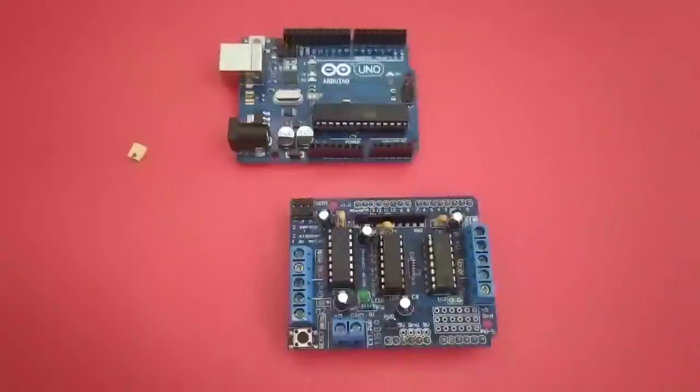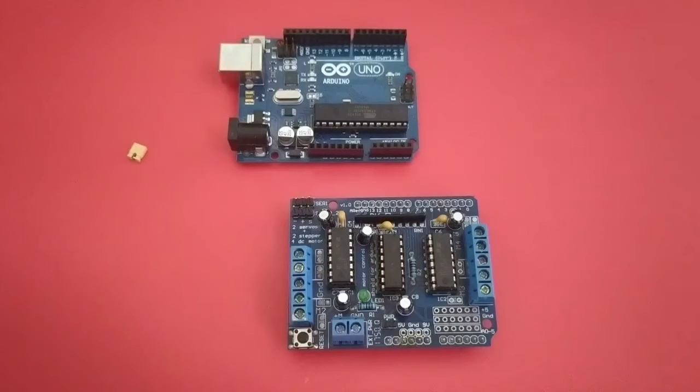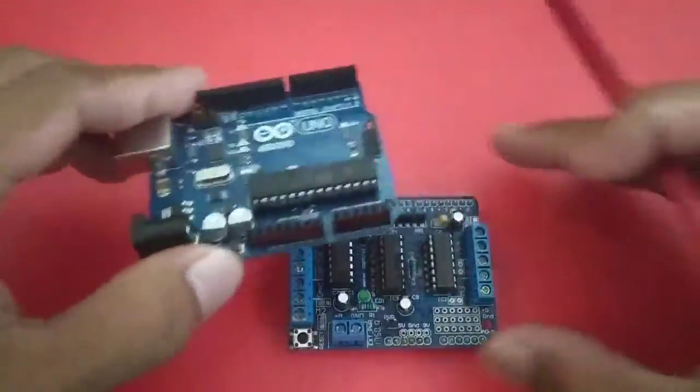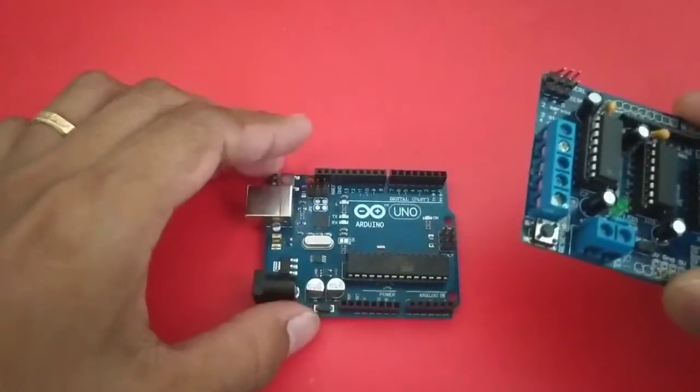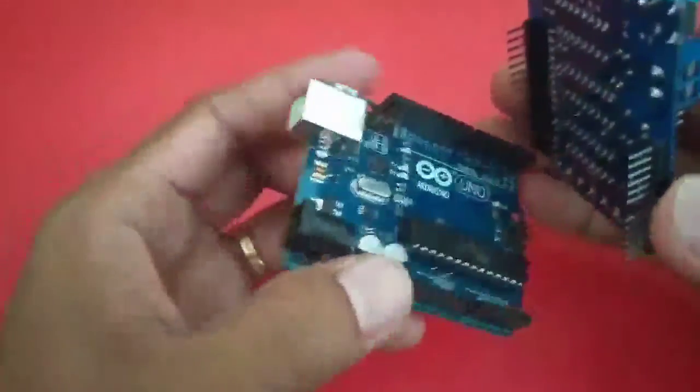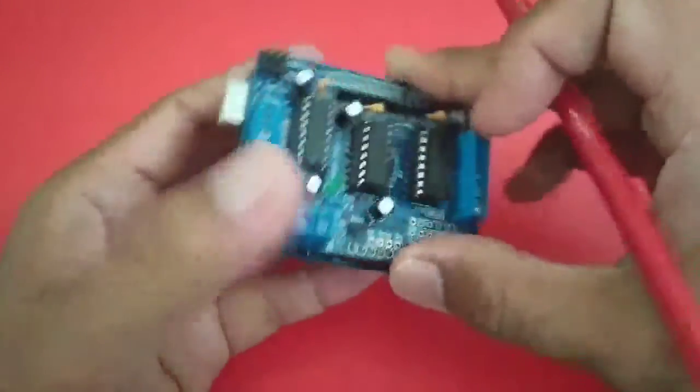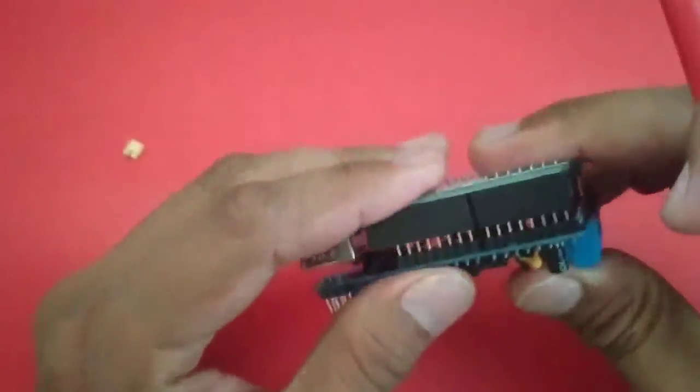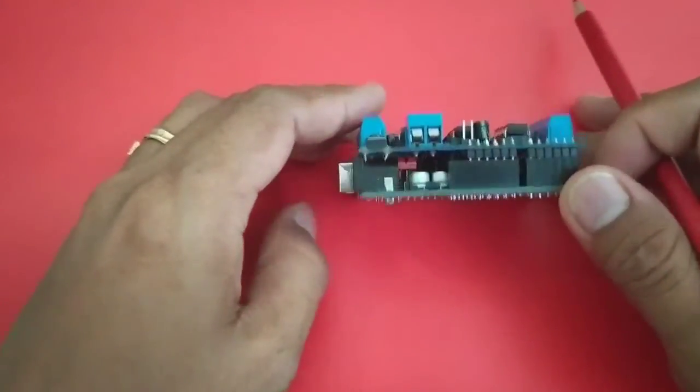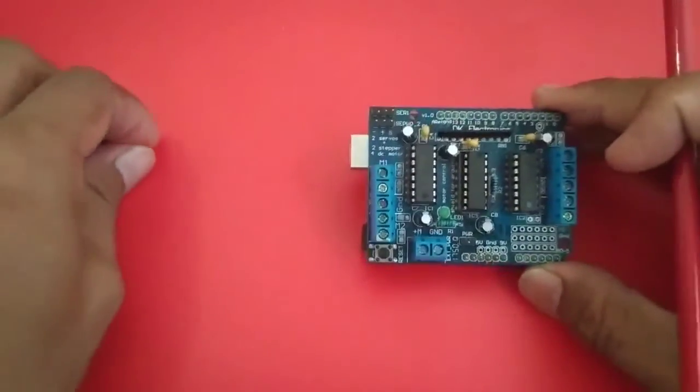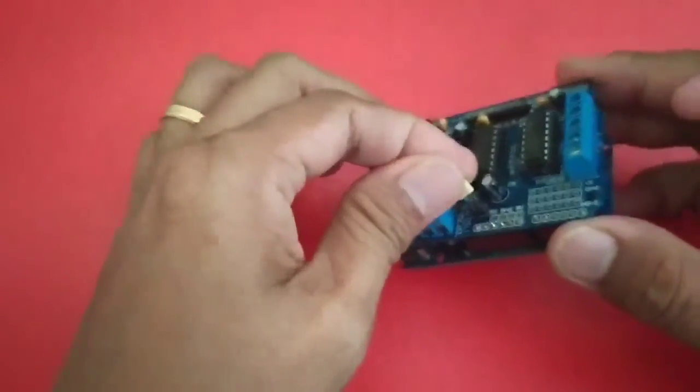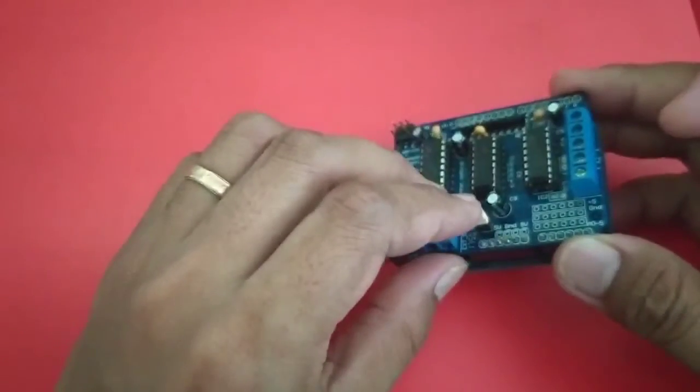And for the demonstration, we will only use a single power supply for both the Arduino Uno and for the motor driver shield. First, we will connect our Arduino and the motor driver shield. We just fit the connectors, like this one. The Arduino Uno is below. Since this is a single power supply, we will put the jumper wire in the PWR.